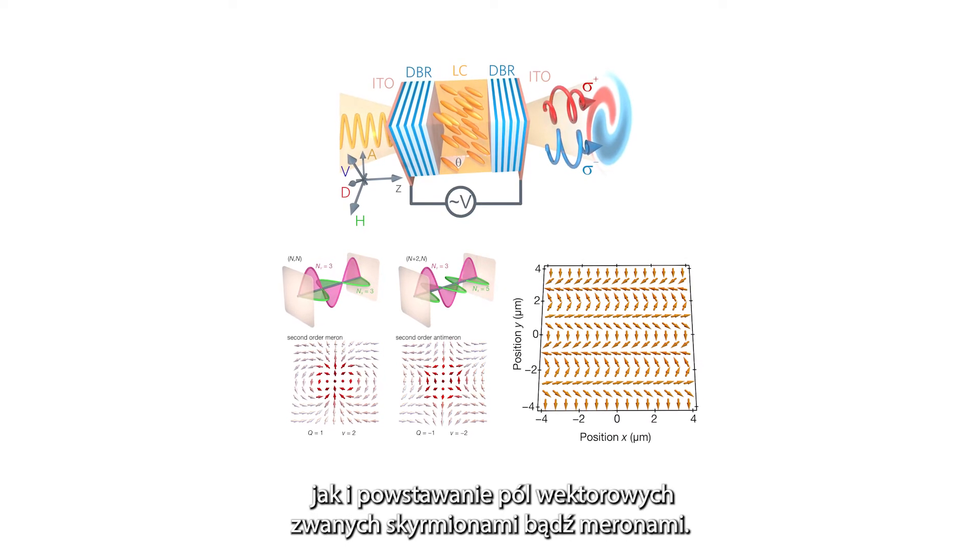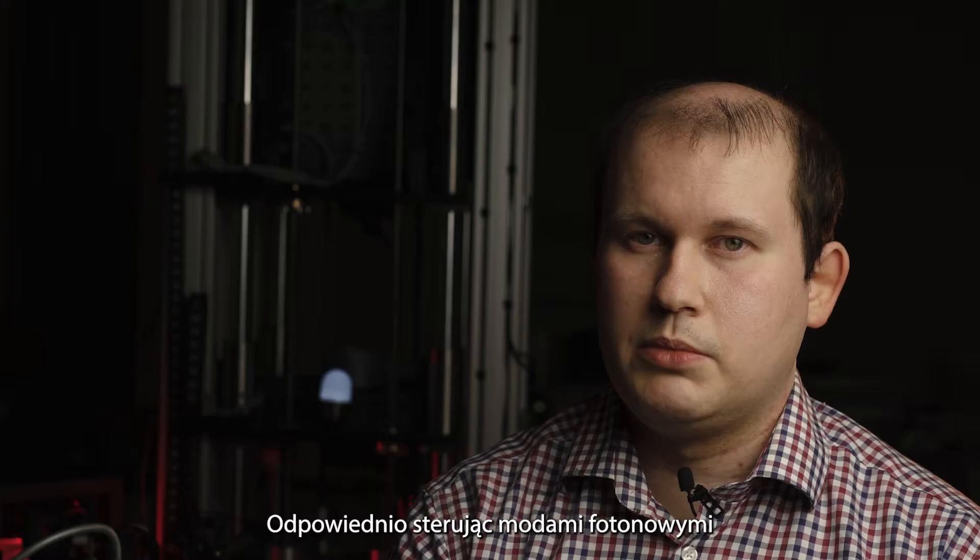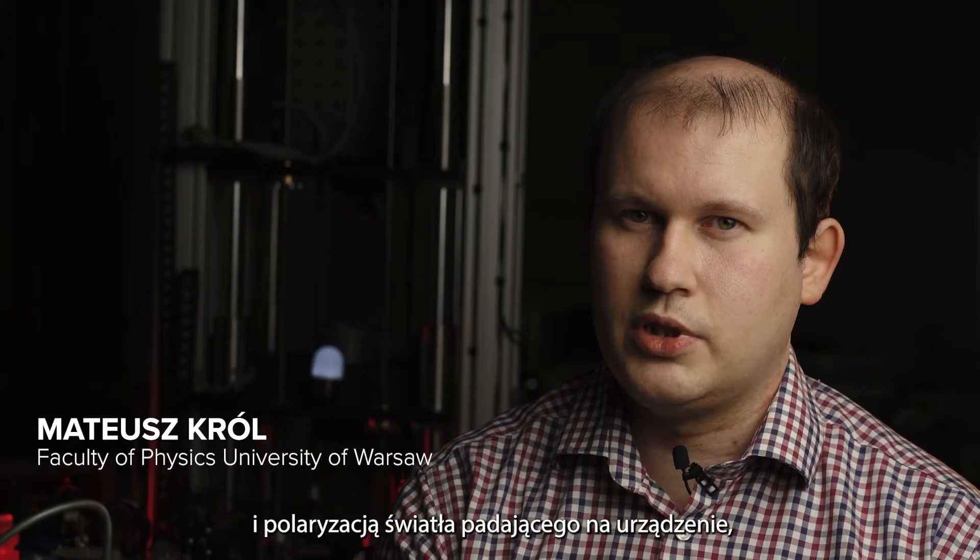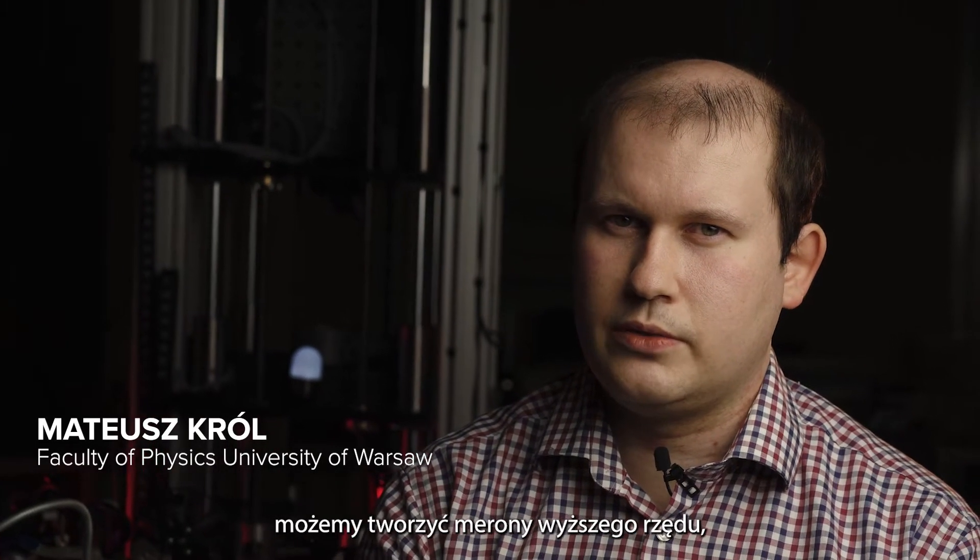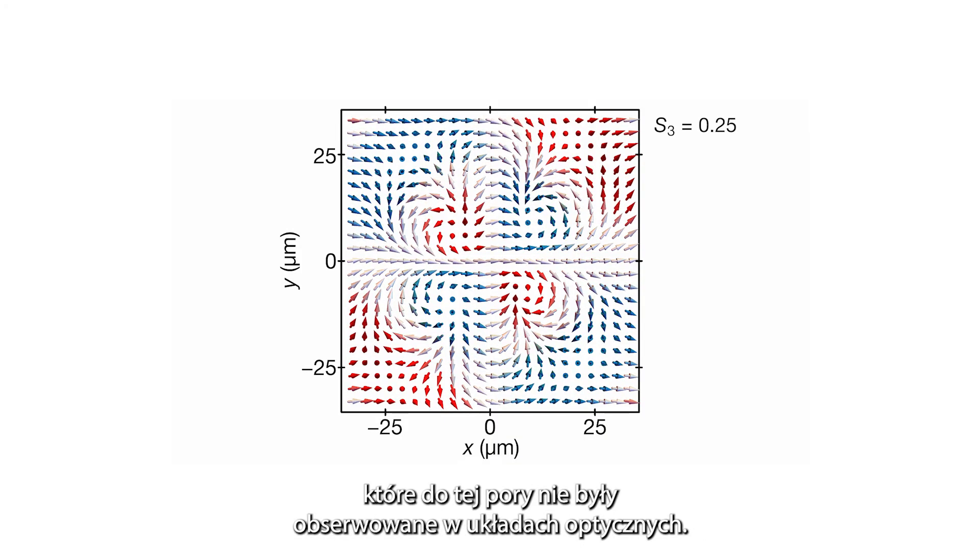As well as creation of vector fields called skyrmions or merons. By controlling the photonic modes and polarization of incident light, we can observe higher-order merons that have not been observed in optics so far.